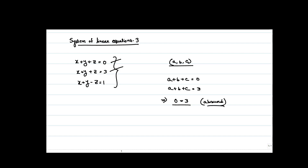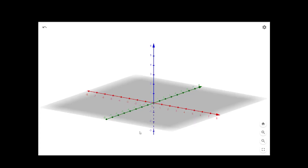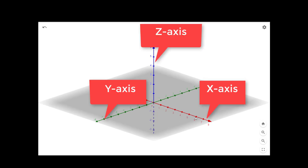Let us see the geometrical representation of this so that we can understand the geometry behind these three equations. We are using GeoGebra to see the geometric representation of the system of linear equations. Here the red line is our x-axis, the green line is our y-axis, and the blue line, which is perpendicular to both x and y axes, is our z-axis.